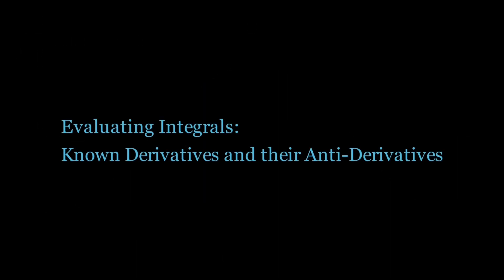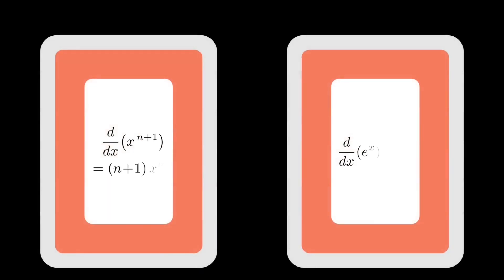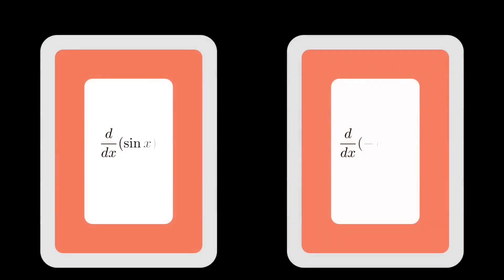Let's start with some known derivatives which we learned back when doing differential calculus and flip them and see how we can get the integrals, which are really the anti-derivatives. The power rule in reverse takes x to the power n to x to the power n plus 1 over n plus 1 when n is not equal to minus 1, while e to the power x stays as e to the power x.